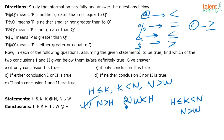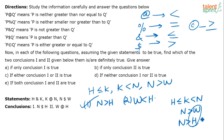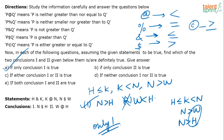Now let us look at the next conclusion: W is less than H. We know that N is greater than H and N is greater than W. But do we know any relationship between W and H? No, we don't know any relationship between W and H. So with the given information, we cannot say that W is less than H — this conclusion does not follow. So only conclusion one follows, that is option A.